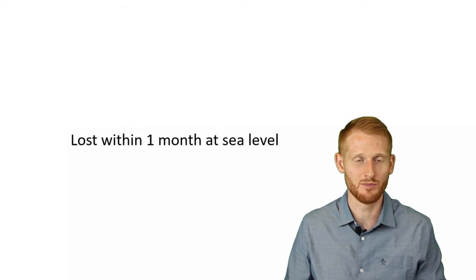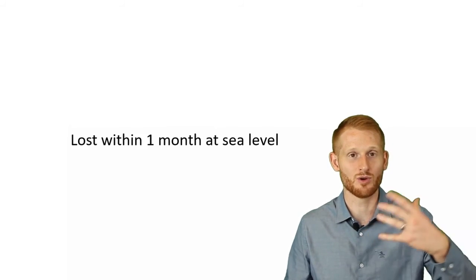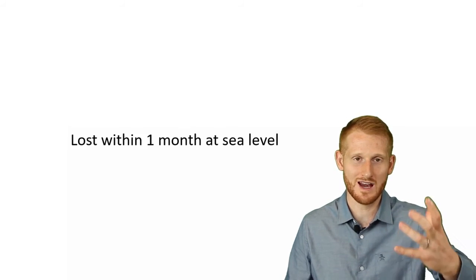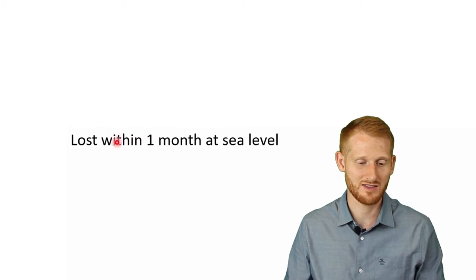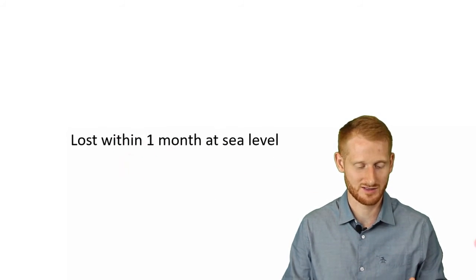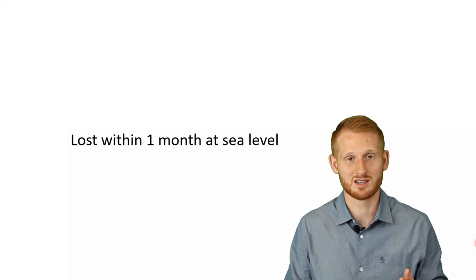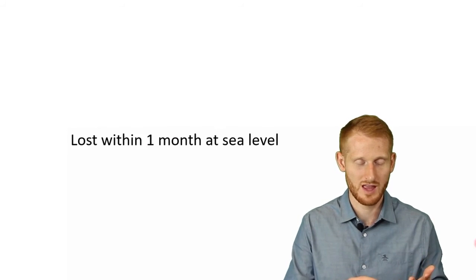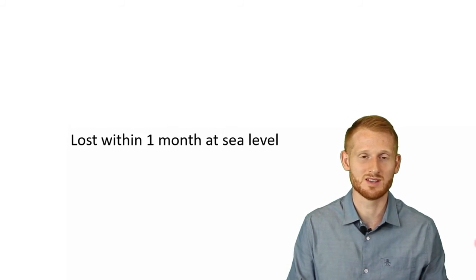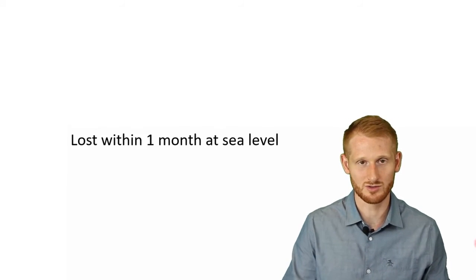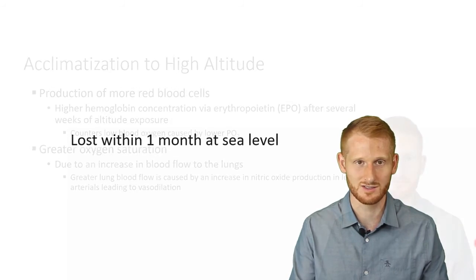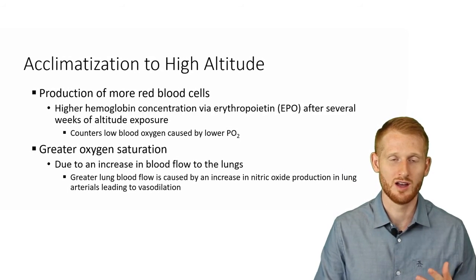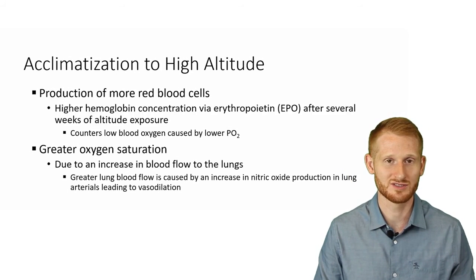Once you come back down to sea level, you're able to maintain the improvements gained at altitude. This is why athletes go to altitude to live or train and then return to sea level to compete — you can maintain these adaptations for about a month after returning. The primary benefit is an increase in red blood cells, meaning more hemoglobin circulating in the blood to take up oxygen and carry it to the tissues.